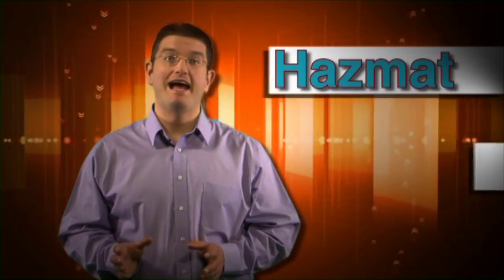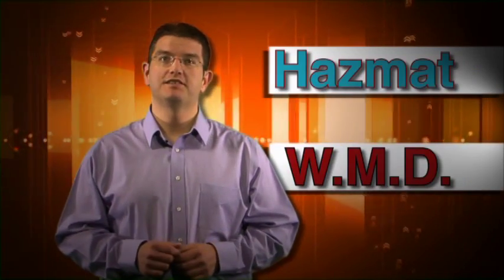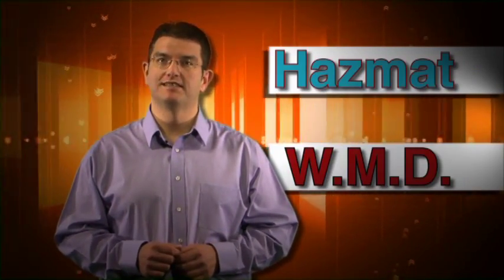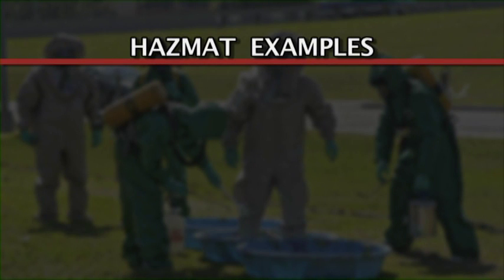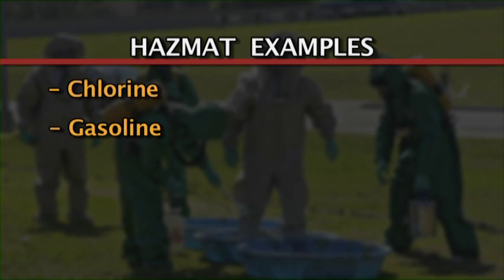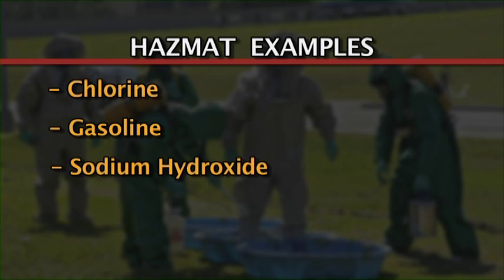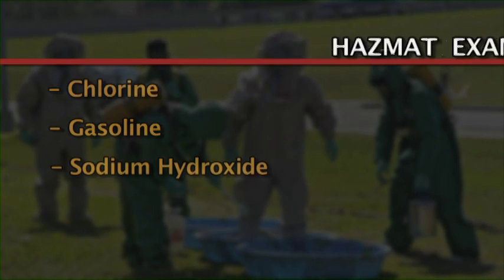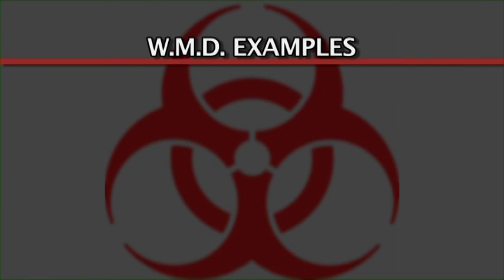Let's take a closer look at what might be considered a hazmat incident. Hazmat examples include chlorine — a strong oxidizer that is corrosive to lung tissue — gasoline, which is flammable and can actually be explosive under certain conditions, and sodium hydroxide, which is corrosive to both tissue and metals.